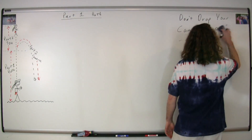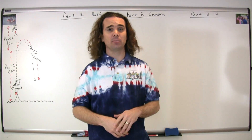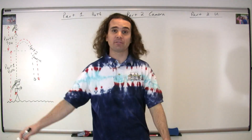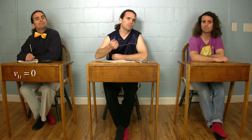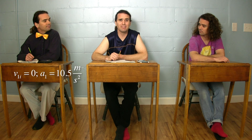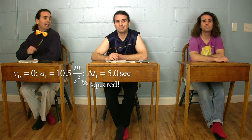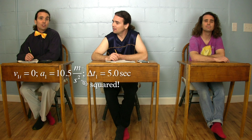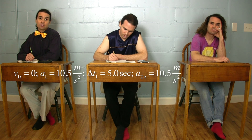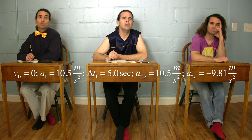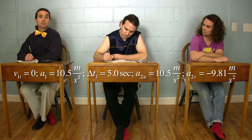Let's start by listing all the variables we know in all the different parts. The initial velocity for Part 1 is zero because it starts out at rest. The acceleration for Part 1 is 10.5 meters per second squared, and the change in time for Part 1 is 5.0 seconds. You are still wearing the rocket pack in Part 2, so your acceleration for Part 2 is still 10.5 meters per second squared. However, the camera is not touching anything else and is therefore in free fall, with an acceleration of negative 9.81 meters per second squared.